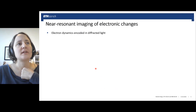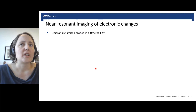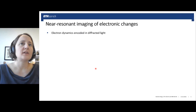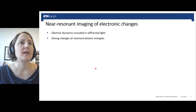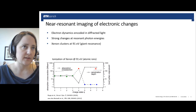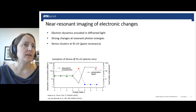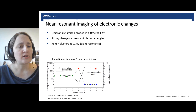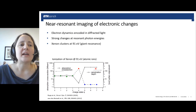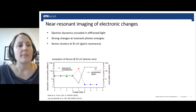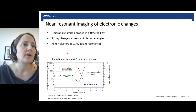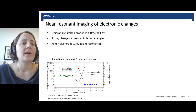Where can electronic changes be imaged best? Strong changes will be observed at resonant or close-to-resonant photon energies. I will discuss two examples. The first is xenon clusters at 91 eV photon energy — a special region for xenon where the giant resonance is located, meaning many electrons in the xenon electronic structure can be resonantly ionized. Looking at the absorption cross section of xenon as a function of charge state, neutral xenon at 91 eV has a high cross section of about 25 megabarn.